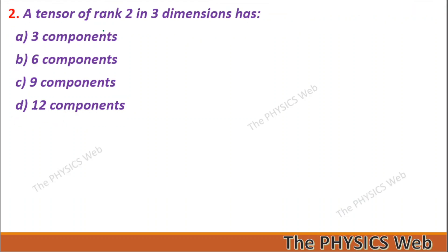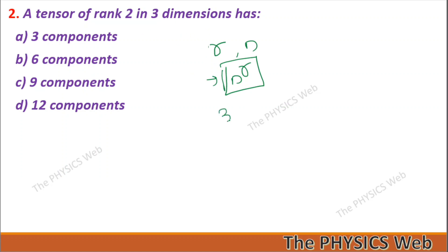Question 2: A tensor of rank two in three dimensions has how many components? Remember, a tensor of rank r in n dimensions will have n to the power r components. Here rank is 2 and dimension is 3, so 3 to the power 2 — the tensor will have 9 components.